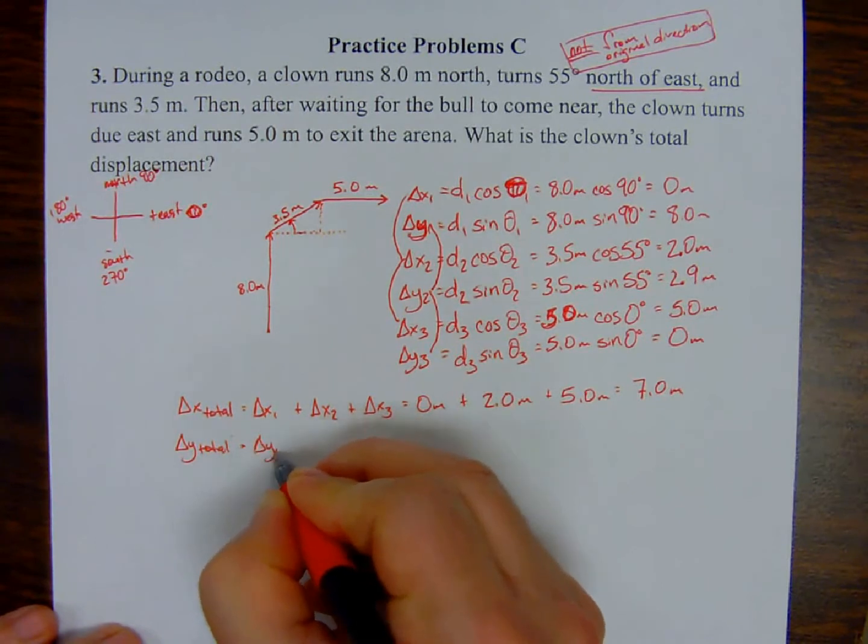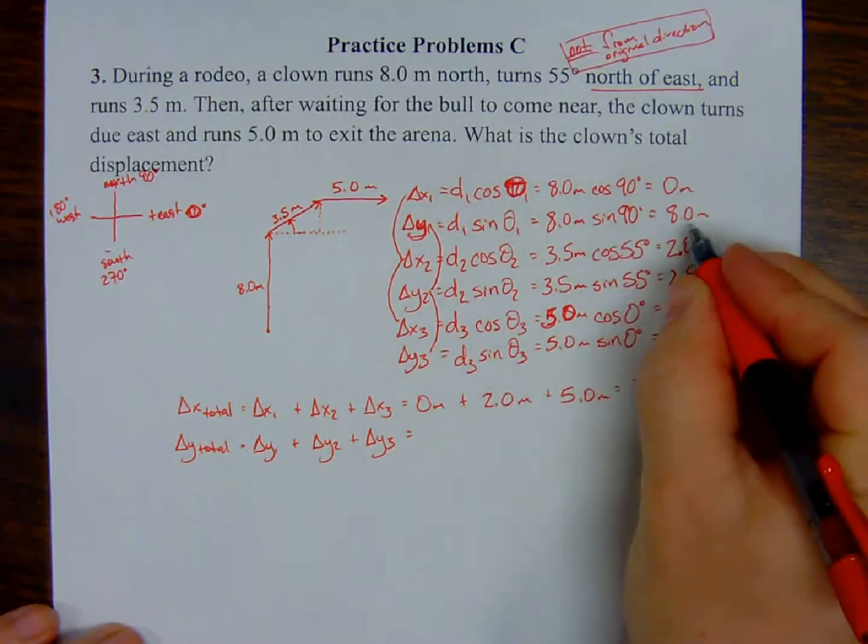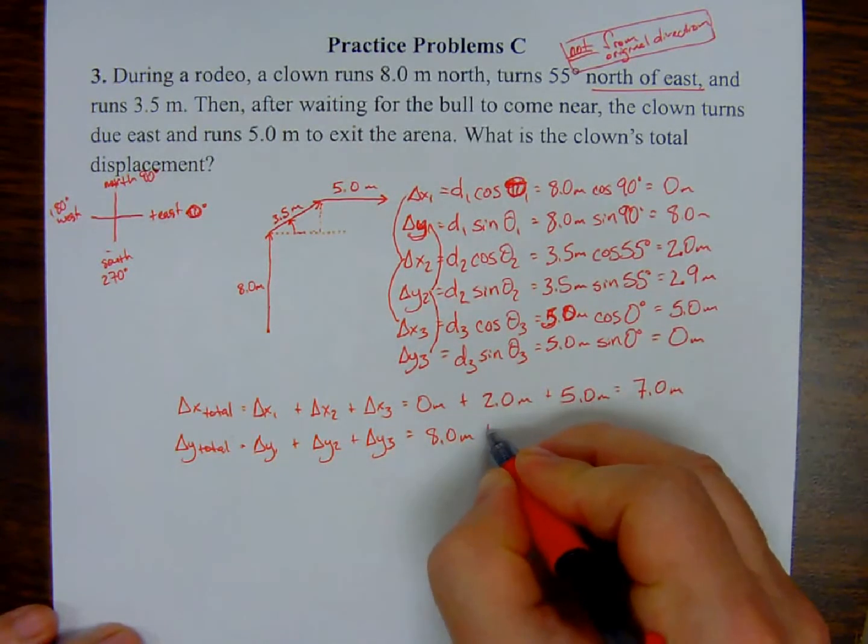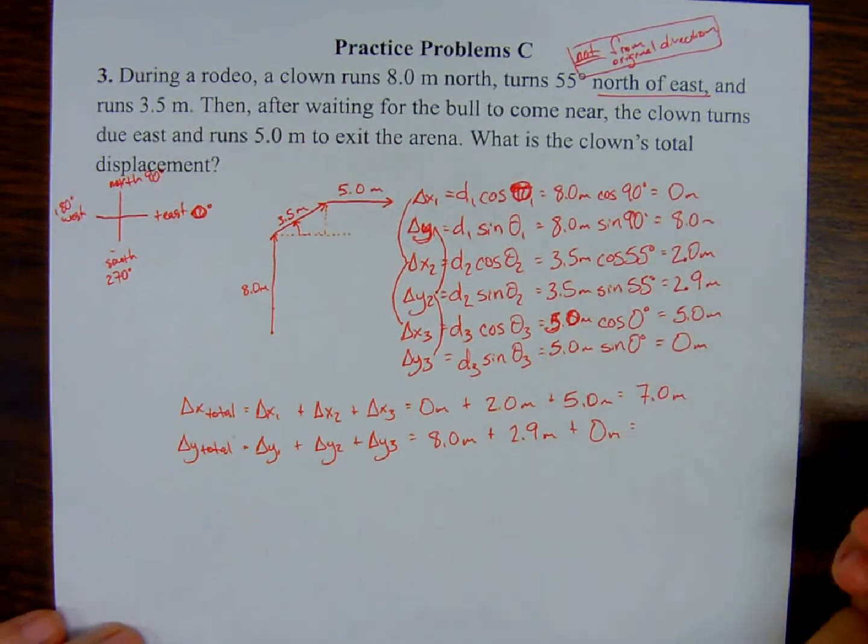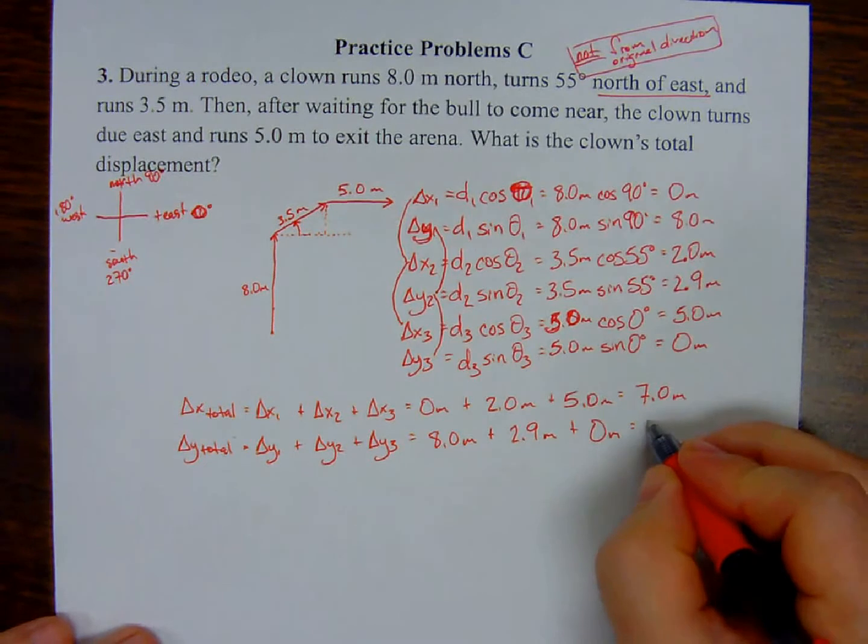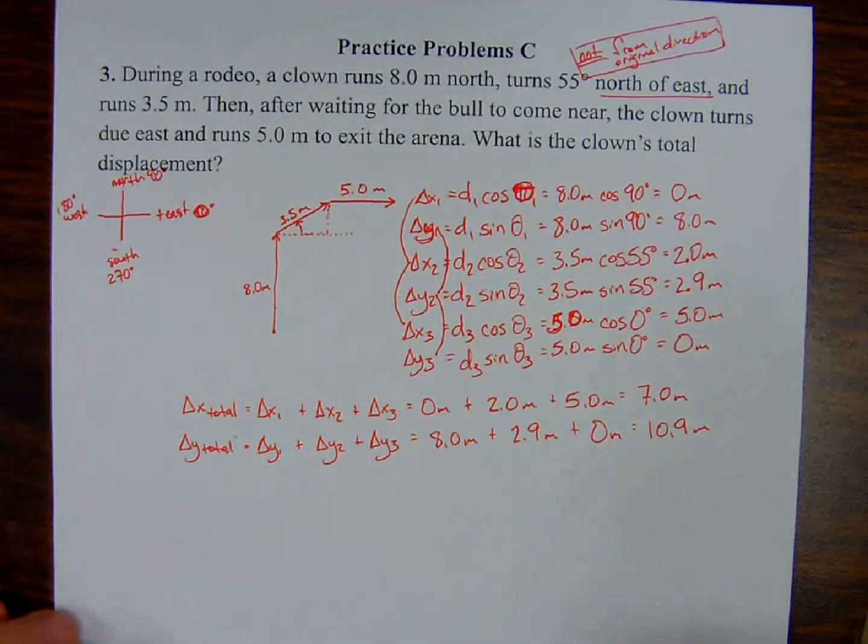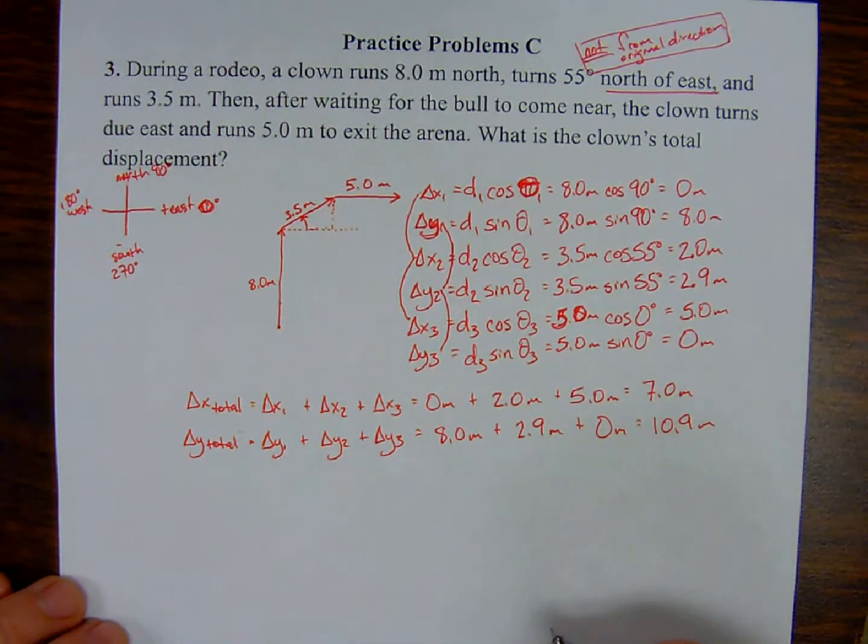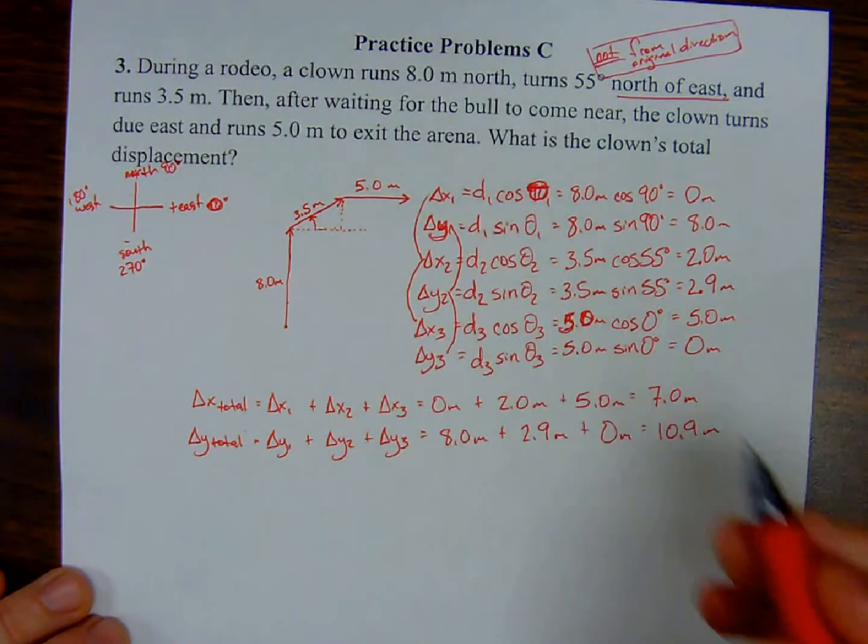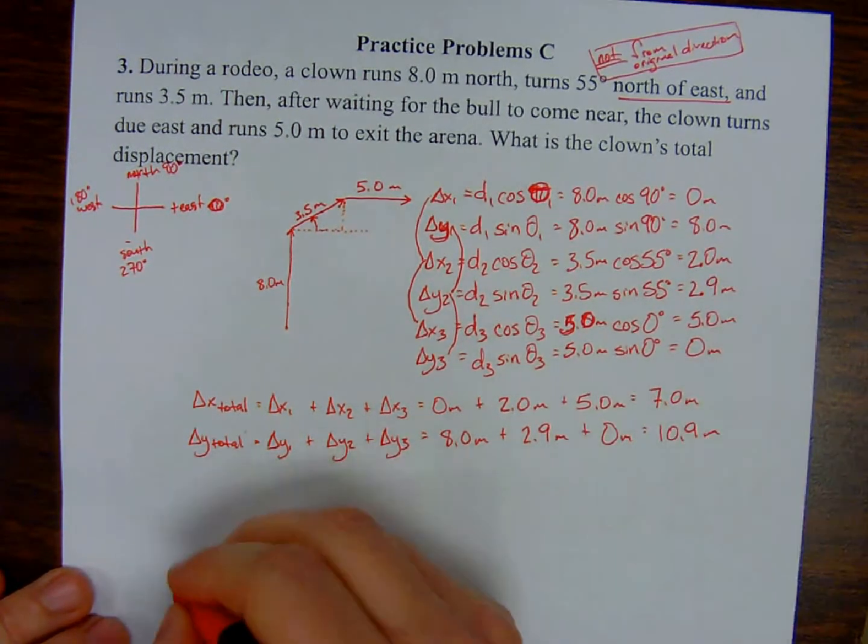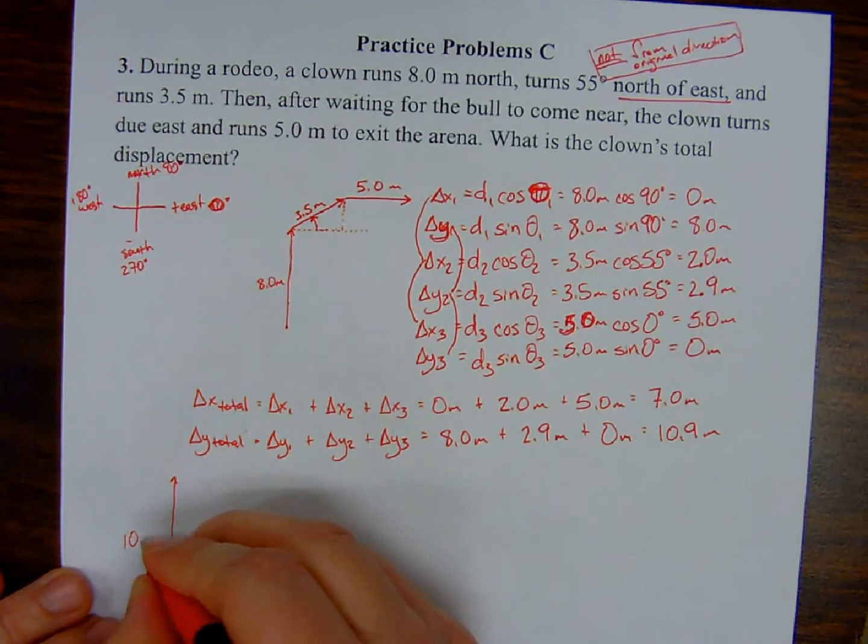And now I can make my triangle. So our initial movement was up, and then we ended up moving to the east. So I'm gonna draw my resulting triangle with a y component of 10.9 meters and then an x component of 7.0 meters. And now I can work for that result. Again, displacement, right? Displacement is a vector. Vectors have magnitude and direction. So for magnitude, I'm going to use the Pythagorean theorem. And for direction, I'm going to be using the inverse tangent function. So let's go.